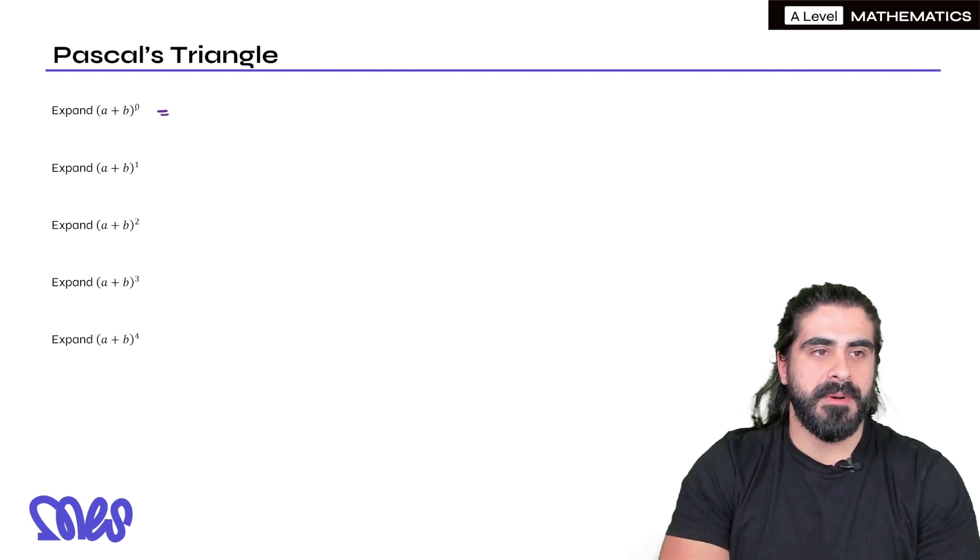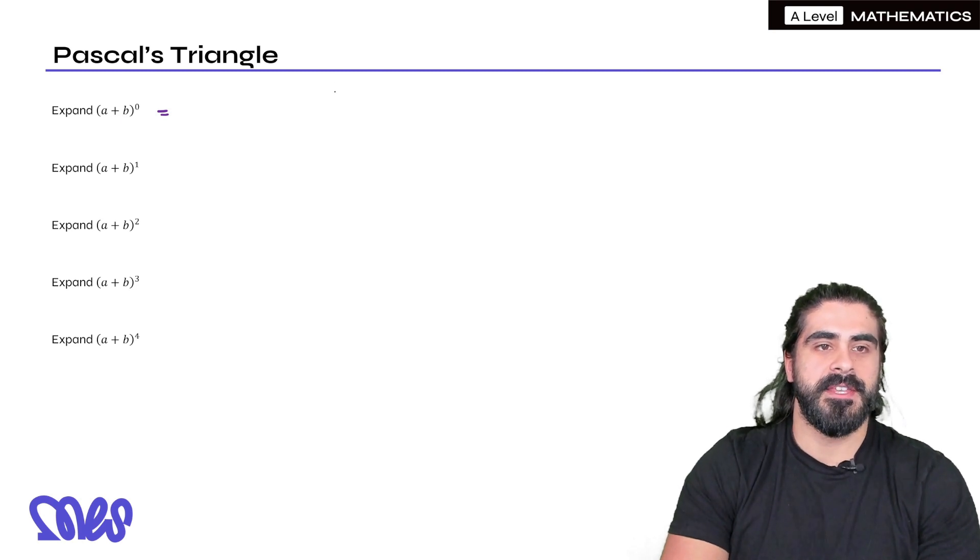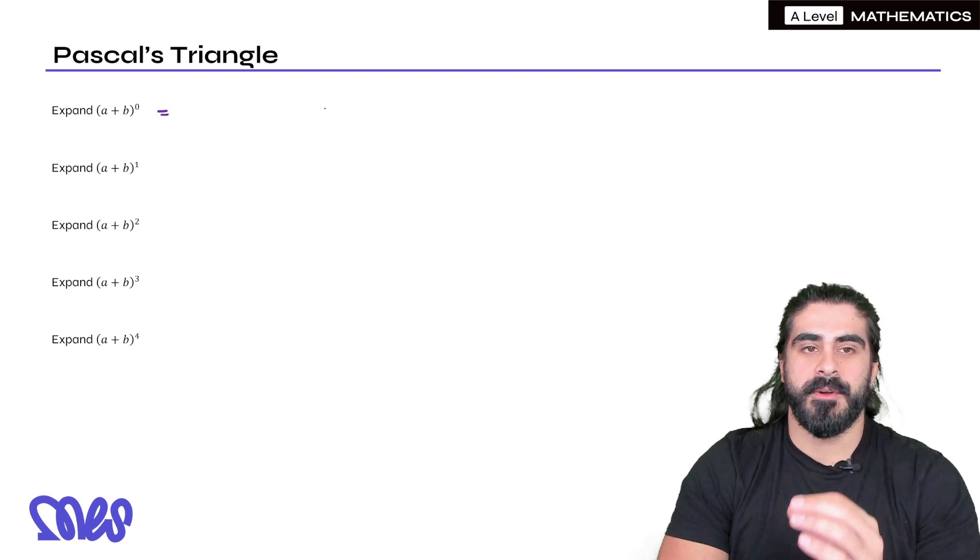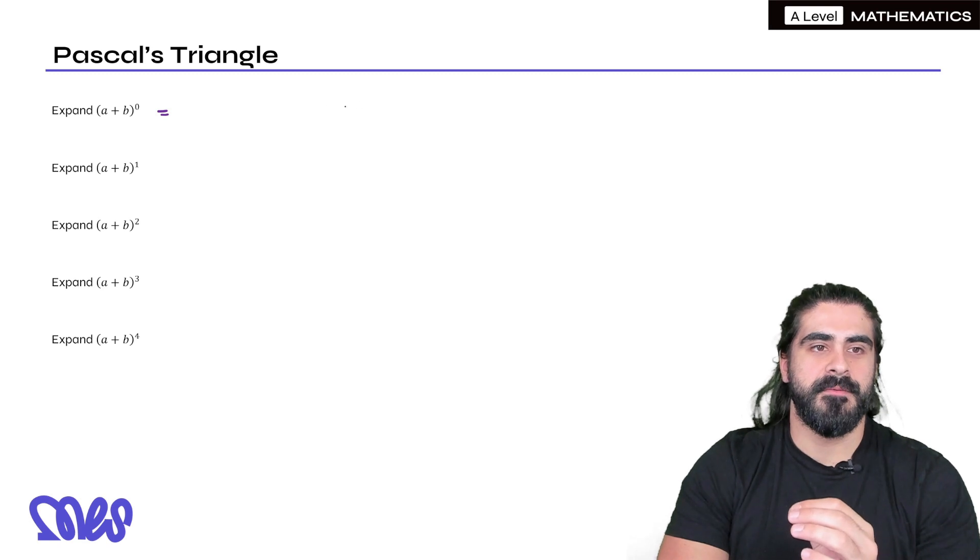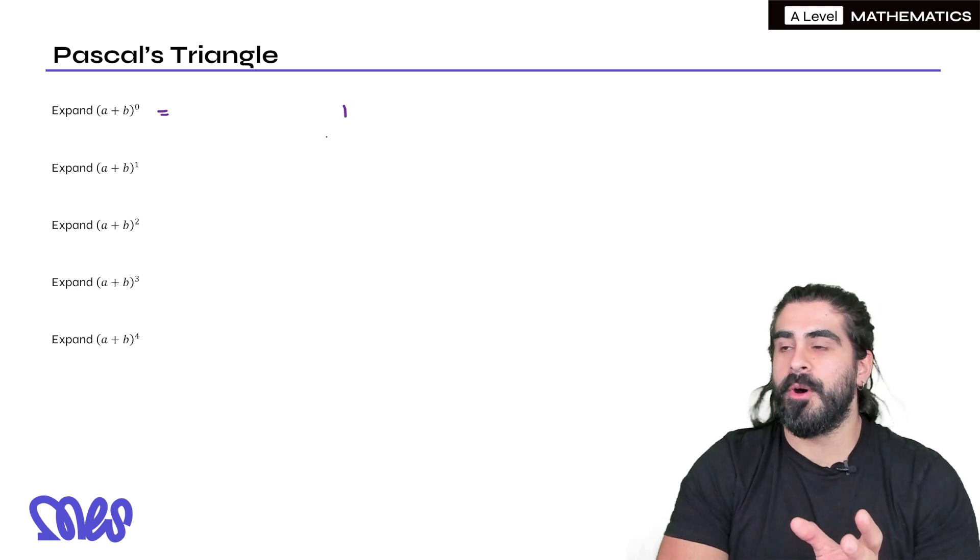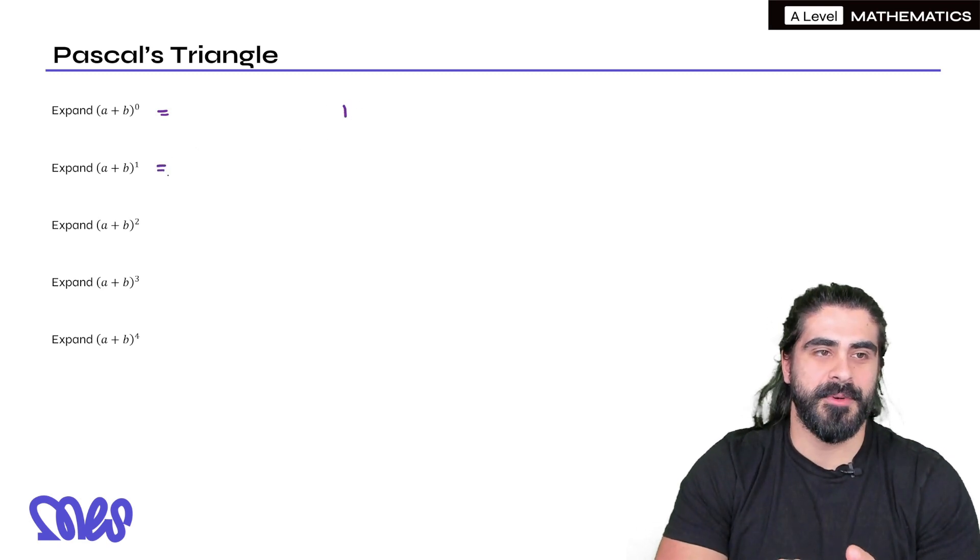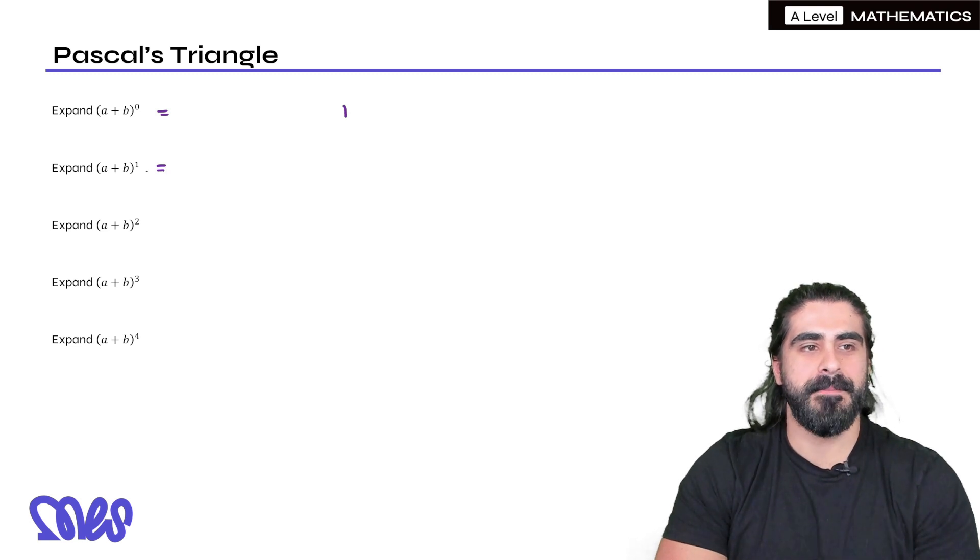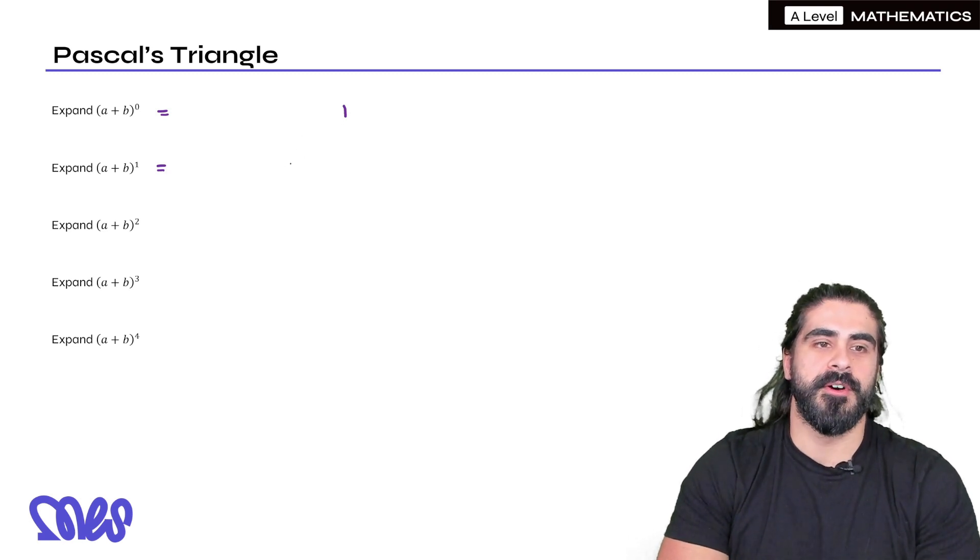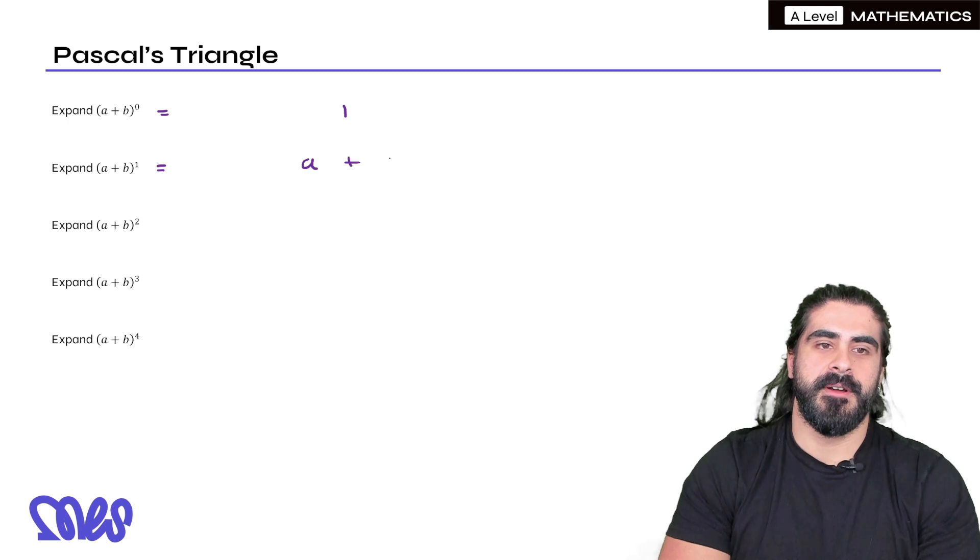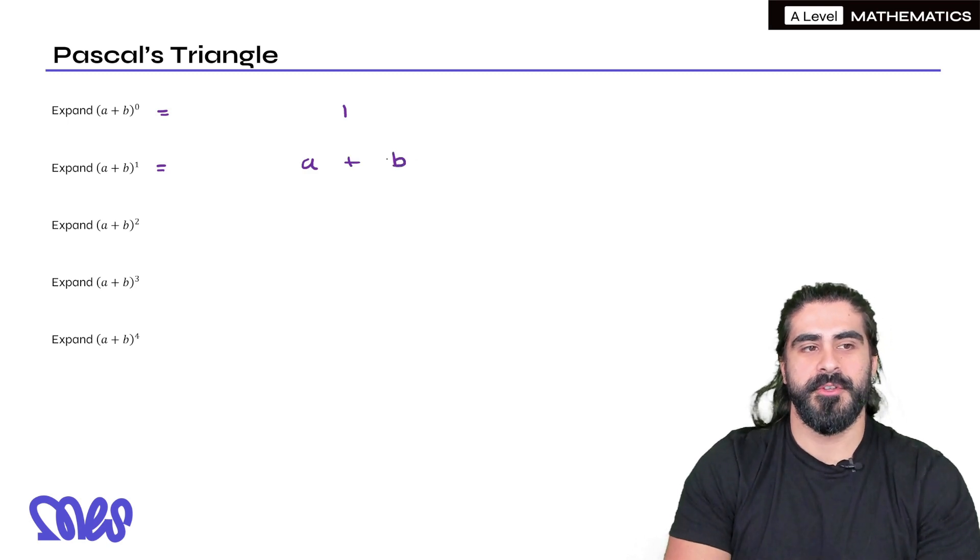So getting right into it, we need to discover what Pascal's triangle is, so we're going to do some expansions and then you're going to see a connection. Expand (a + b) to the power of zero. Even in this case when we take anything to the power of zero that's one. Now I'm going to write in a specific way - I'm going to put one over here. What about (a + b) to the power of one? Well we know that's just a + b.